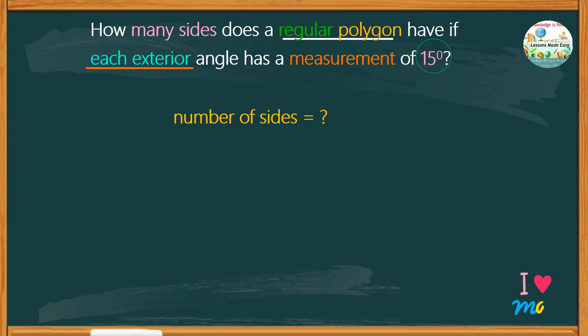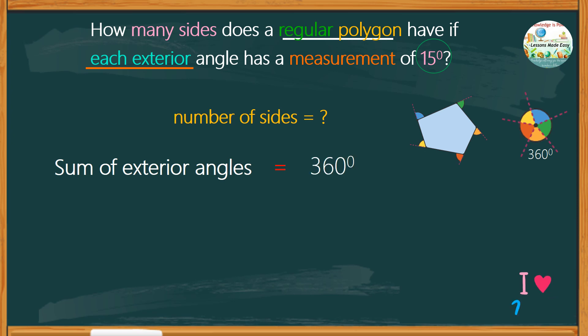It is common knowledge that the sum of the exterior angles of all types of polygons is 360 degrees. It means if each exterior angle is 15 degrees multiplied by the unknown number of sides, it would be equal to 360 degrees.